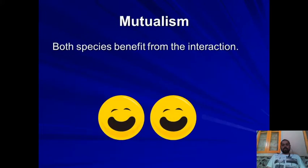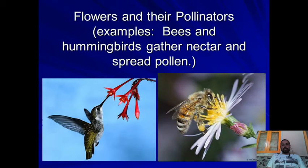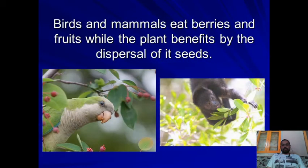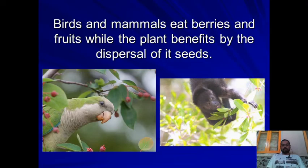The next example is mutualism, where both species benefit from the interaction — both species are happy. For example, a hummingbird gathers nectar and spreads pollen. Honey bees get honey from flowers and help in pollination. There are also birds and mammals which eat berries and fruits, moving from tree to tree, which aids in the dispersal of seeds.